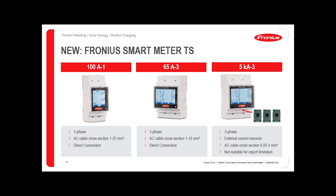That means we now have a meter that can fit within your consumer unit that needs no CTs, and has a significant cost saving — about a third of the price of the previous units. We're really expecting this to be very popular for Primo installations, whether that be the snap-in or the new Gen24. We also have two other new meters: the 65 amp three-phase meter, which is similar to the 100 amp but with a three-phase supply and a direct connection — so no CTs are used. And we also have a 5Ka, which is a meter that can be used with CTs for larger-scale installations. Personally, I would recommend using the UL480 rather than the 5Ka, because it has that G100 compliance.